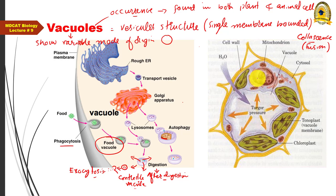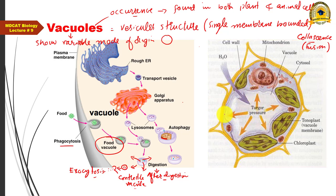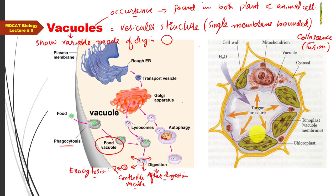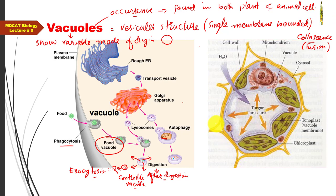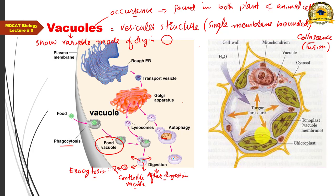Due to this large central vacuole, the cytoplasmic contents of the plant cell are pushed toward the periphery. That is why the nucleus in a plant cell is not found in the center — because the central portion of the cytoplasm is occupied by this large vacuole, pushing all other organelles and the nucleus toward the cell membrane.